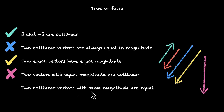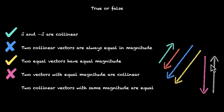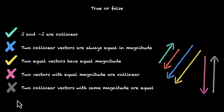Fifth: two collinear vectors with same magnitude are equal. If you rush through this, it might seem true, but think about it — for vectors to be collinear they can be facing the same or the opposite direction. If you pick the opposite case: one vector facing down and the other facing up, they are both collinear and have the same magnitude, but they are not equal vectors — they are opposite vectors. So this is false.